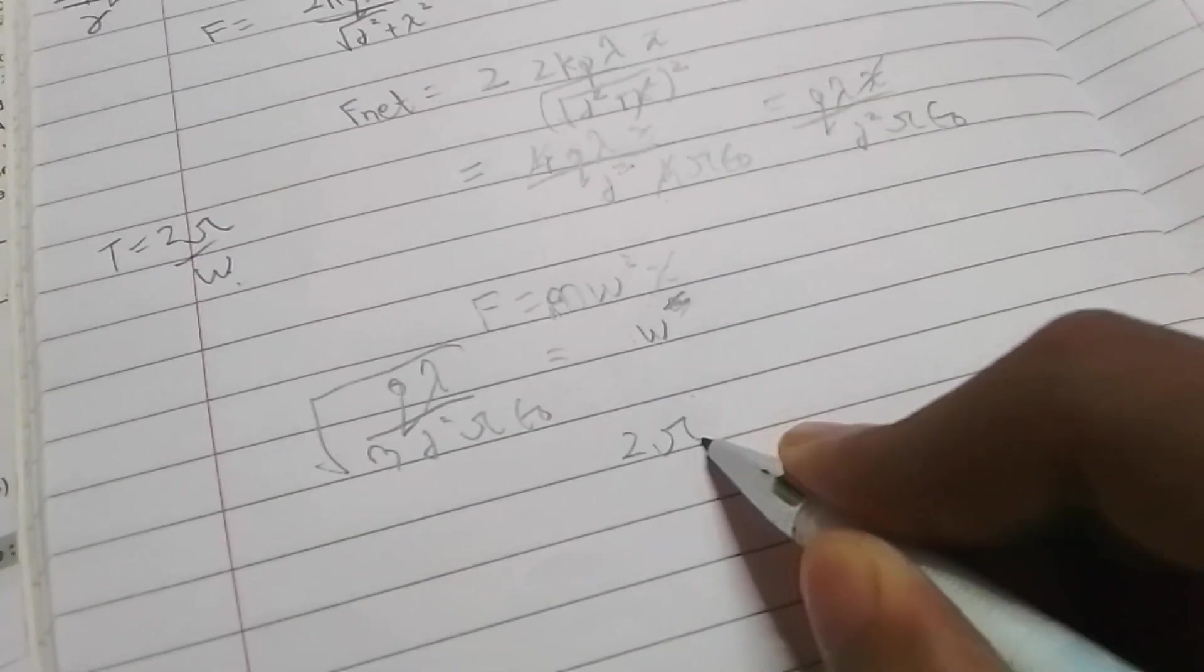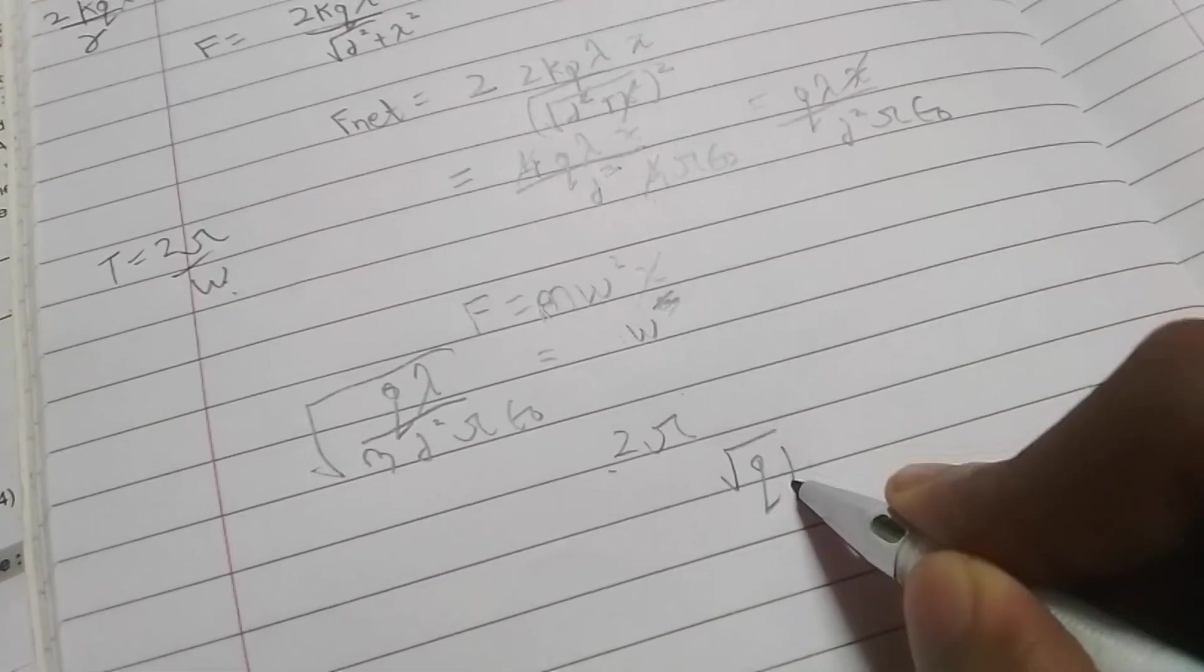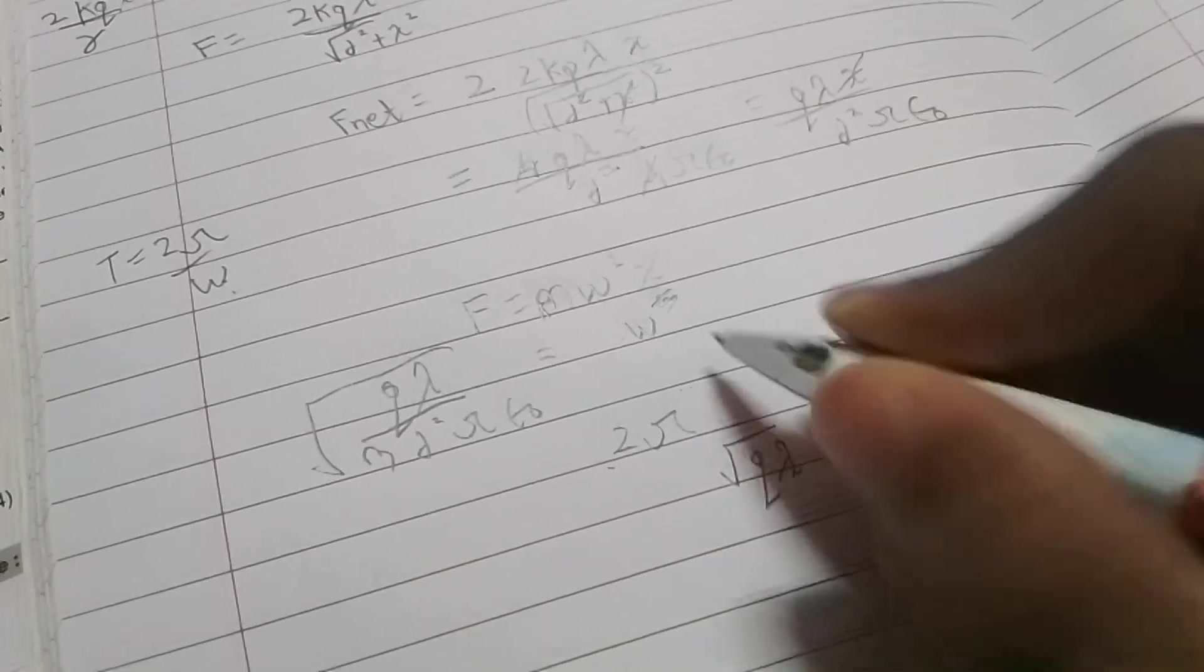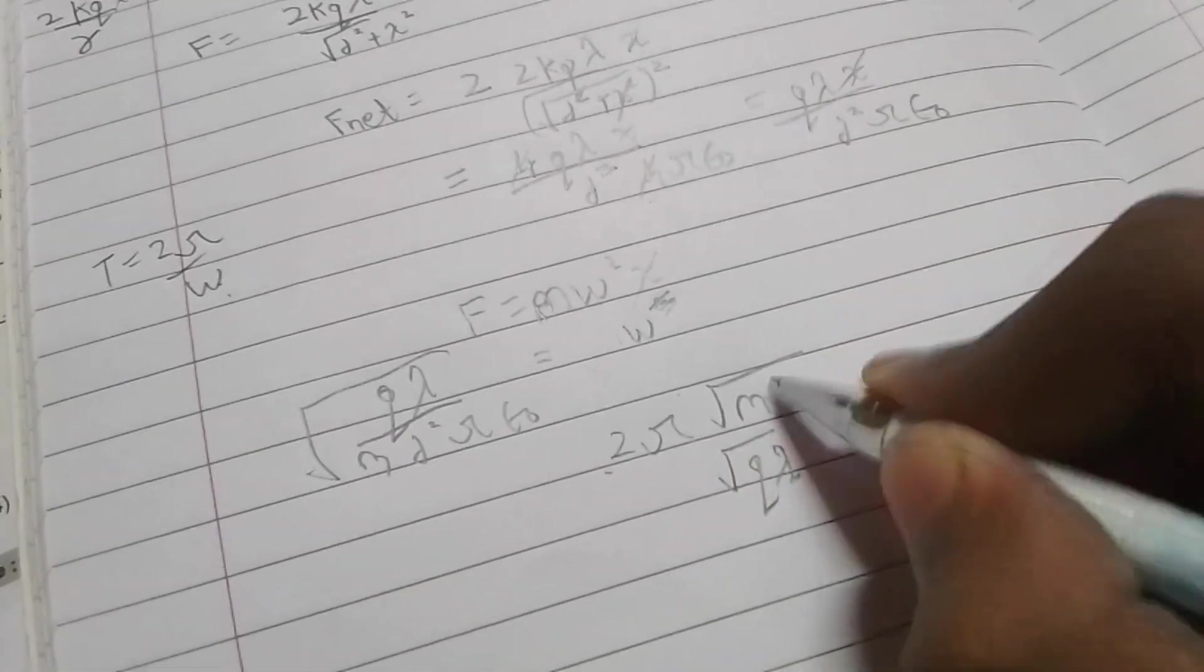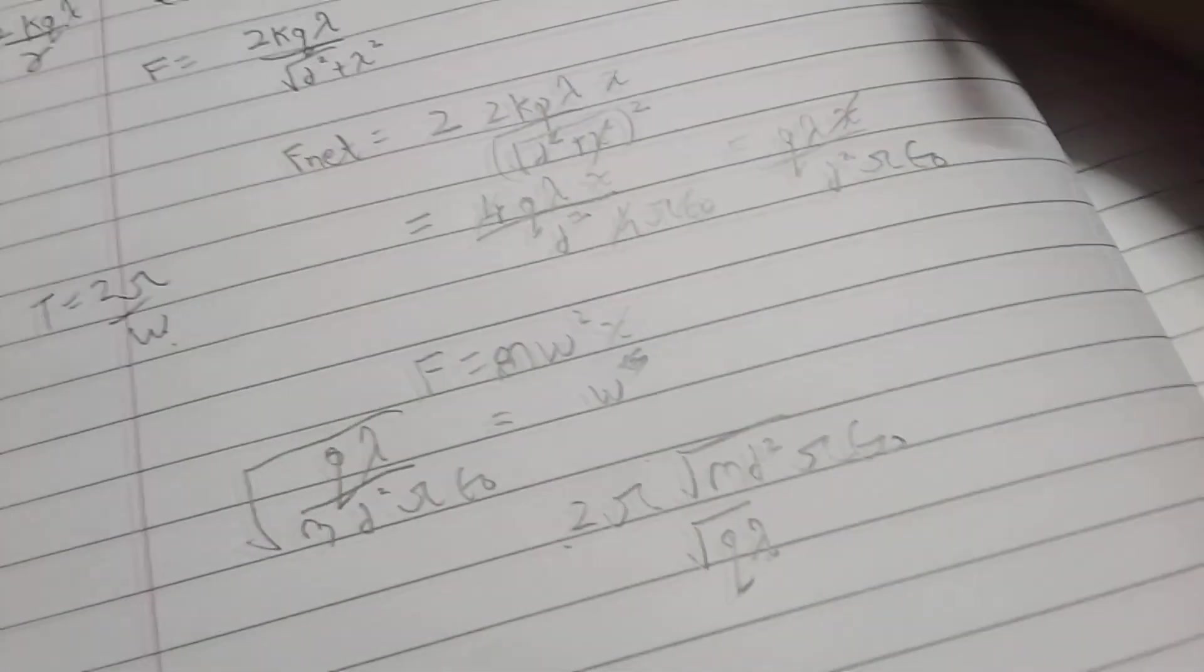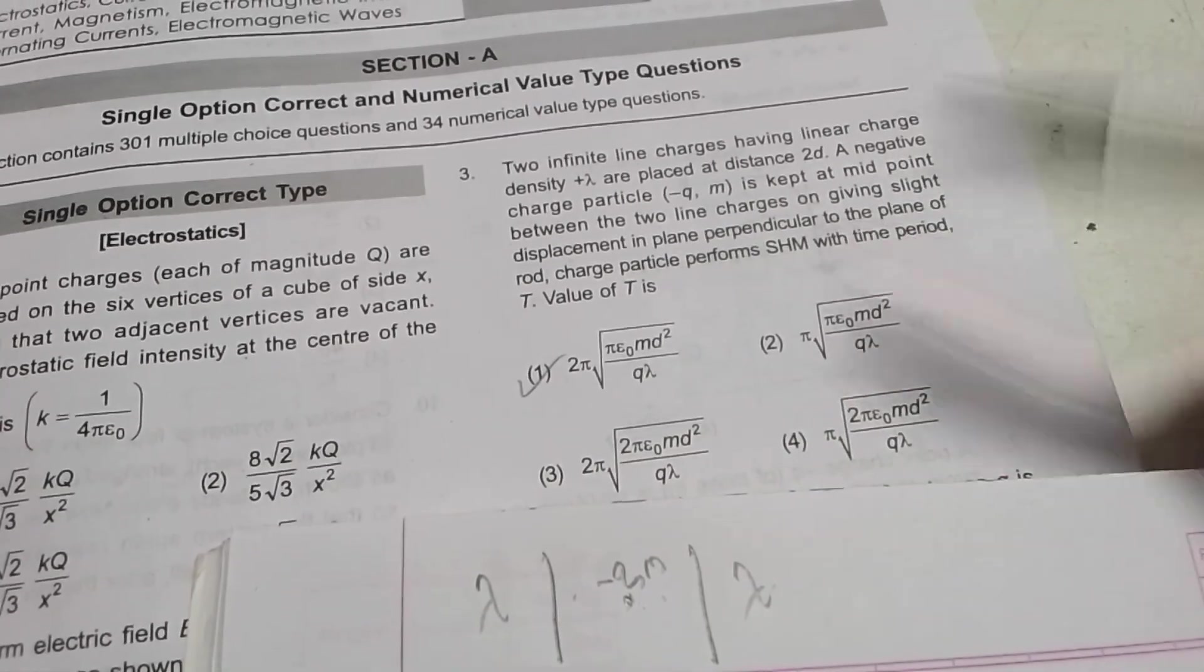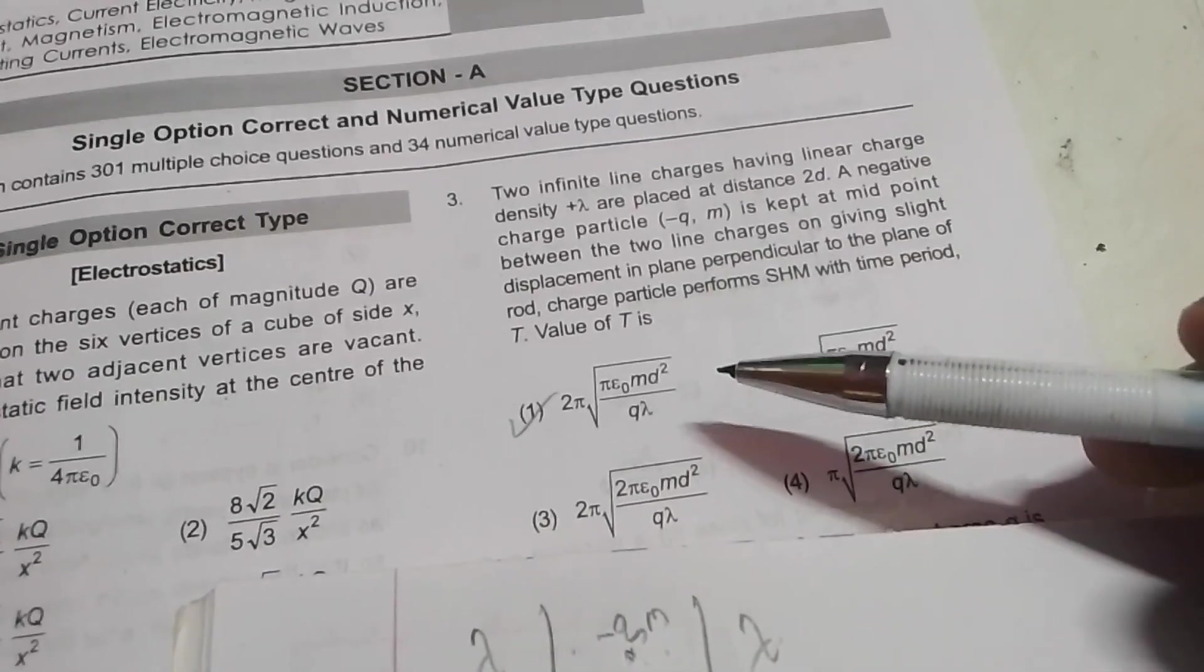We have time period as 2 pi by omega. And omega is... Let's see if we have options. Our first option is absolutely the right one.